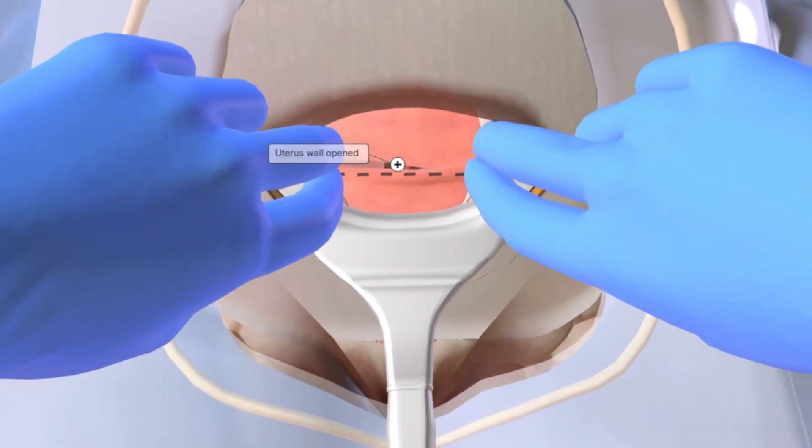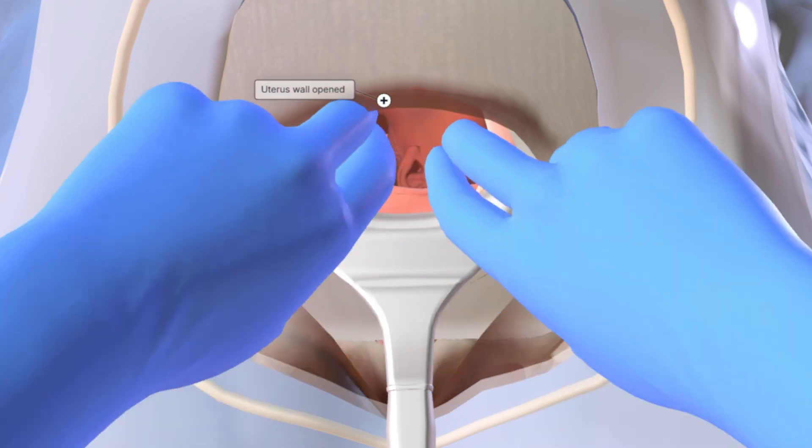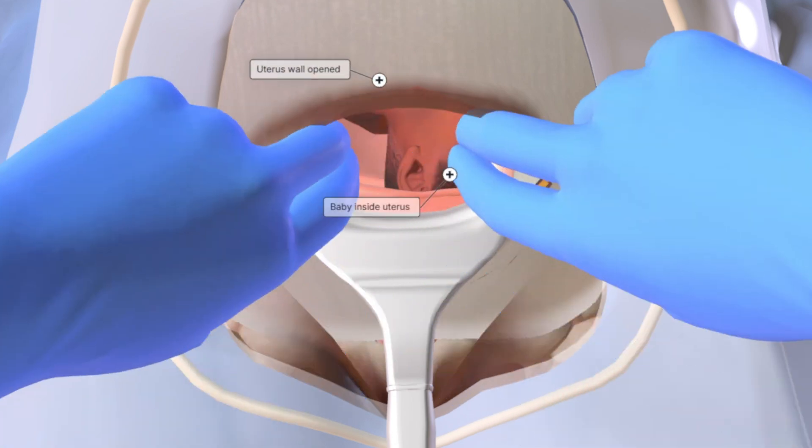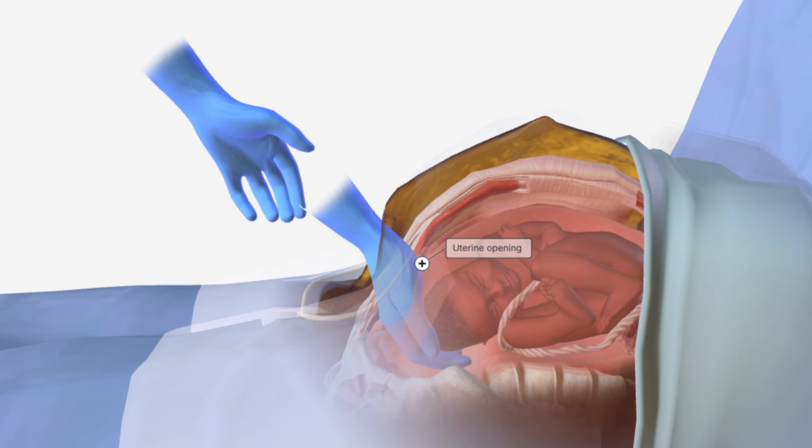The uterus is revealed and a horizontal incision, known as a hysterotomy, is made. The baby is carefully delivered from the uterus.